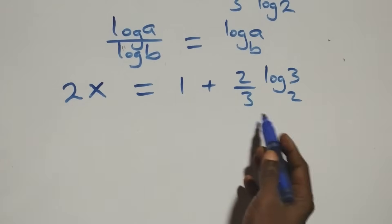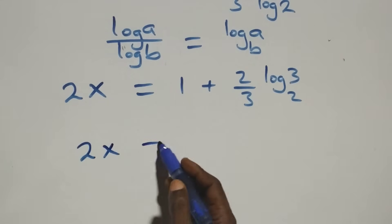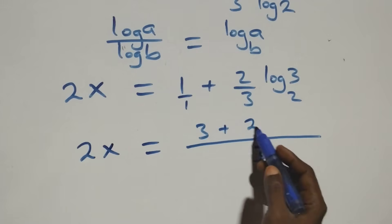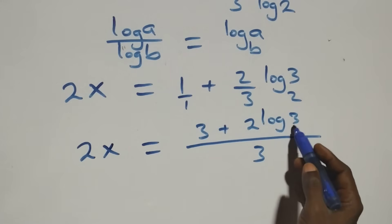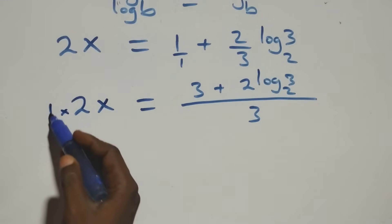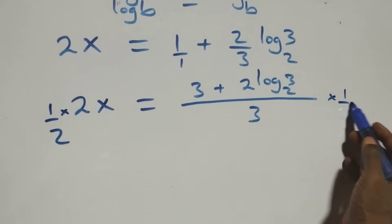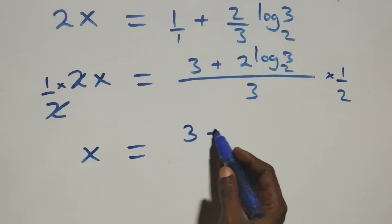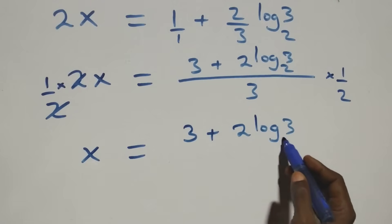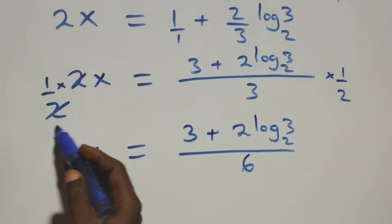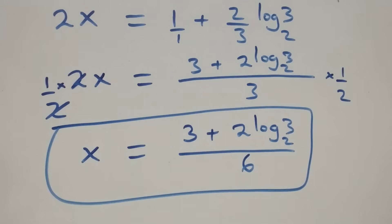We combine this into a single fraction. Writing 1 as 3 over 3, we get 2x equals 3 plus 2 log 3 base 2, all over 3. To solve for x, we multiply both sides by one-half. The 2 cancels on the left, giving x equals 3 plus 2 log 3 base 2, all over 6.